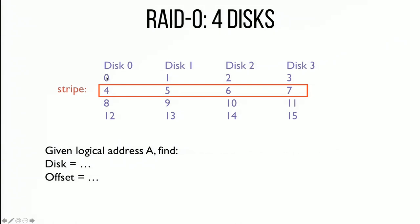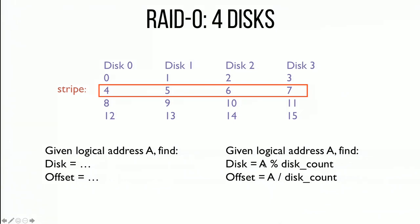There's simple math to figure out the disk and offset given a logical block address A. The disk number is A mod the disk count — so logical blocks 0, 4, 8, 12 all mod 4 equal zero, mapping to disk zero. The offset within the disk is A divided by the disk count (integer division) — so blocks 0–3 divided by 4 is offset zero, blocks 4–7 is offset one, and so forth. Very simple arithmetic to calculate the correct disk number and block number.